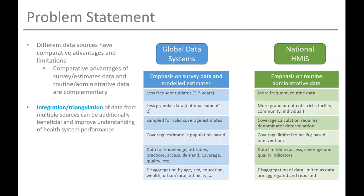If we look deeper into these data sources, we see that they each have advantages and limitations — and importantly, these comparative advantages and limitations are complementary. Looking at frequency, at the global level you're really only getting an update every two to three years for a country, whereas at the national level you have more frequent data — hence the routine data systems — monthly, weekly, or even daily updates depending on the data.